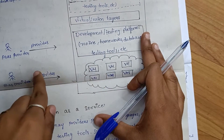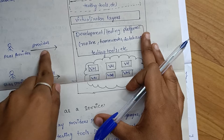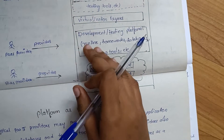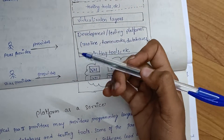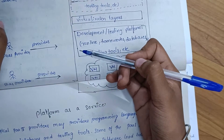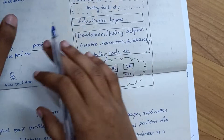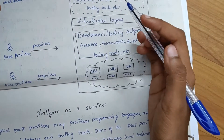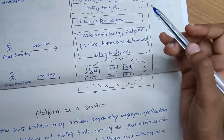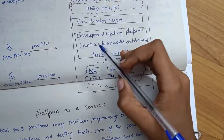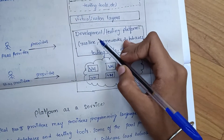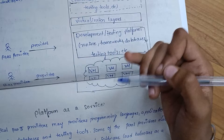We are going to have a producer and consumer. So we are going to have two members of the producer. As a consumer, we are going to have a unique product. We are going to have a lot of customers in the business.